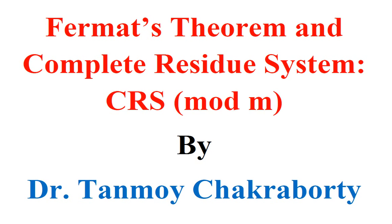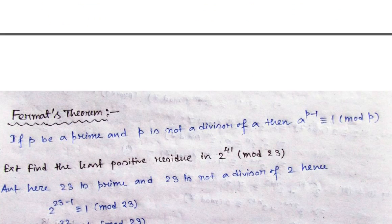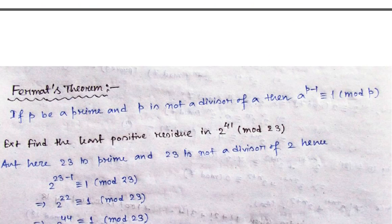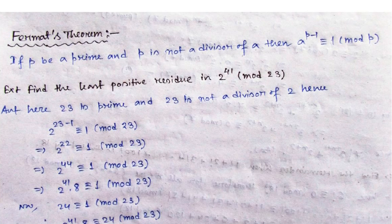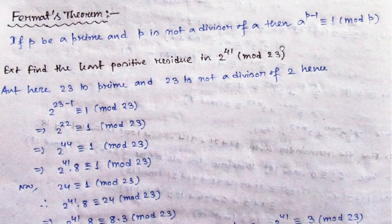In our syllabus, only the statement of Fermat's theorem is given and problems may come. So, what is the statement of Fermat's theorem? If p be any prime number and p is not a divisor of a, where a is any integer, then a to the power (p minus 1) will be congruent to 1 under mod p.